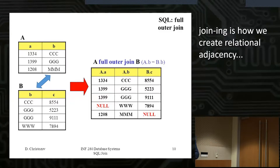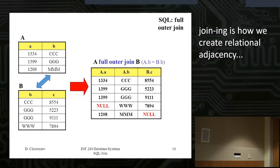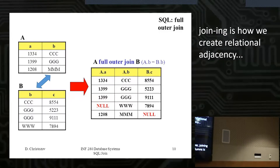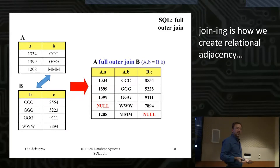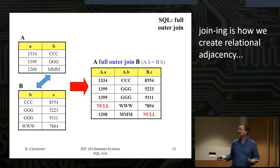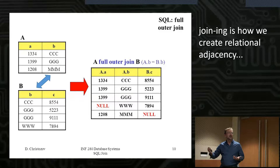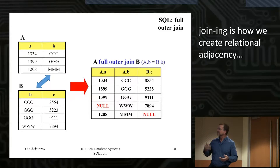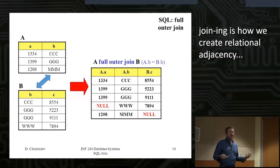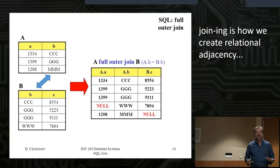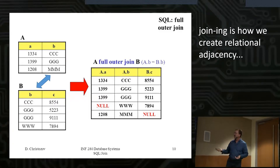If you just tried to do this naively, you'd look at the first row, compare it to every other row, looking for a match — then go to the next row and repeat. This is called a table scan, and it's wildly inefficient — worst case M times M to find all your matches. Joining is how we create relational adjacency, but as you can see, it can be kind of slow.